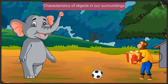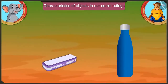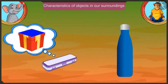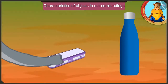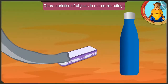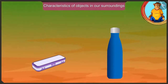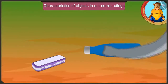Jaggu, what gift did you get for Golu? I have got this pencil box and a water bottle for him. This pencil box also has a flat surface just like your box, so you can slide and move it. And this bottle can be rolled like this.